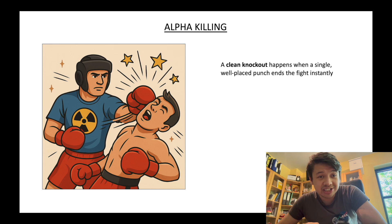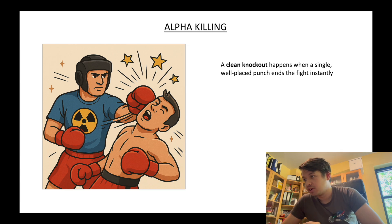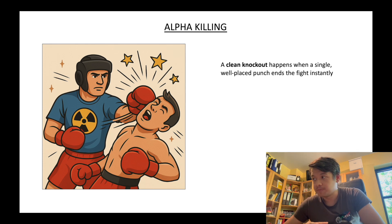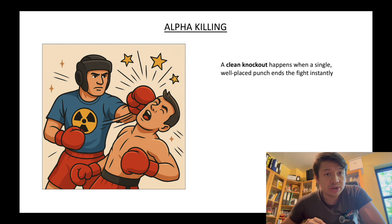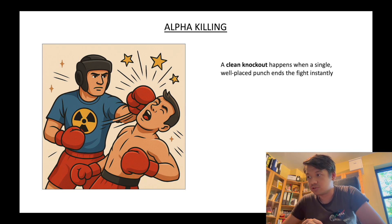Here we have a boxing analogy. Alpha killing is like a massive knockout punch. Radiation delivers a powerful, well-placed hit that knocks the cell out instantly. The cell is immediately destroyed. It's what we call a clean knockout — just like in boxing when one strong punch is enough to knock the opponent out immediately.